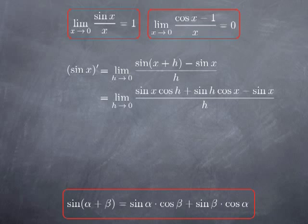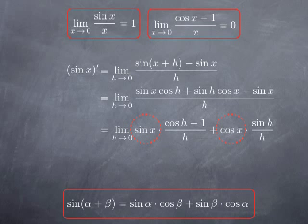So we substitute sin(x + h) for this, and you see that in what we obtain at the top, we can factor sin x out of the first and third terms in the sum. If we do that, we obtain sin x multiplied by (cos h minus 1) over h, and the remaining term is sin(h)cos(x) over h, from which we can pull out cos x. You see that sin x and cos x do not depend on h, and therefore for the limit we are considering, they are constant.